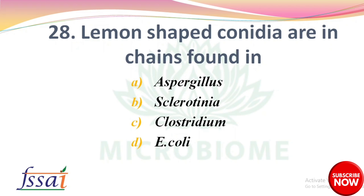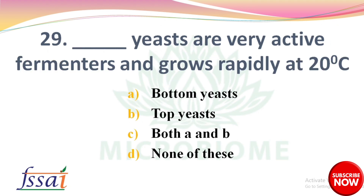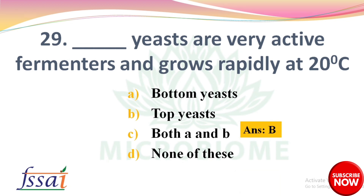Next: Lemon-shaped conidial chains are found in — options: Aspergillus, Sclerotinia, Clostridium, Sclerotia coli. The right answer is option B, Sclerotinia. Next: Dash yeast are very active fermenters and grow rapidly at 20 degrees Celsius — options: bottom yeast, top yeast, both A and B, none of these. The right answer is option B, top yeast.